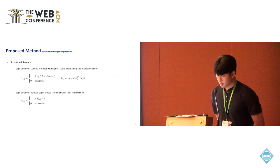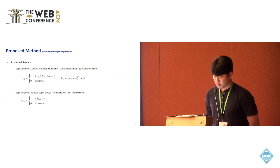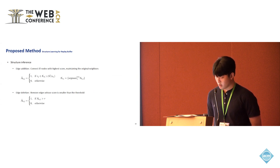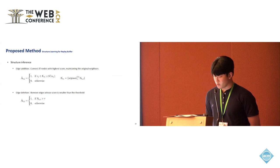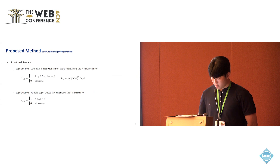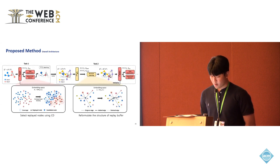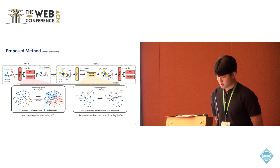The inference process using the trained link prediction module consists of edge addition and edge deletion. Edge addition is performed as connecting n nodes with highest score while maintaining the original neighbors. And edge deletion is performed as removing edges whose score is smaller than a certain threshold. And the overall architecture is as follows. Due to time constraints, we omit the explanation here. Please refer to the paper for further details.